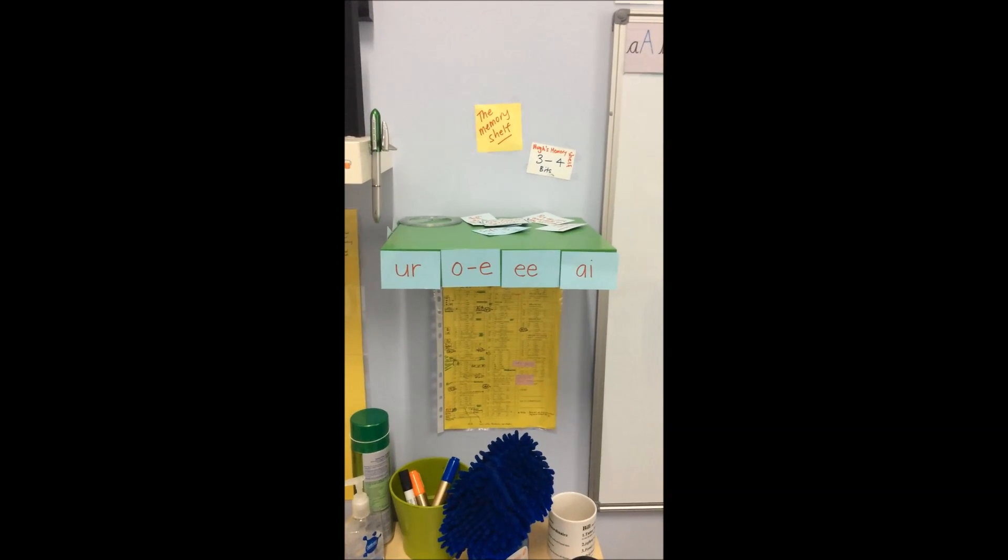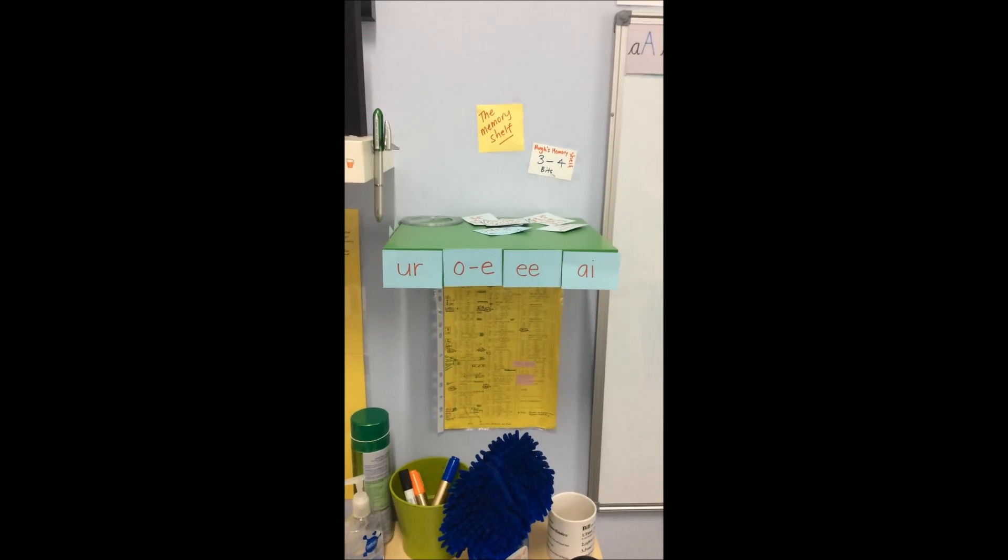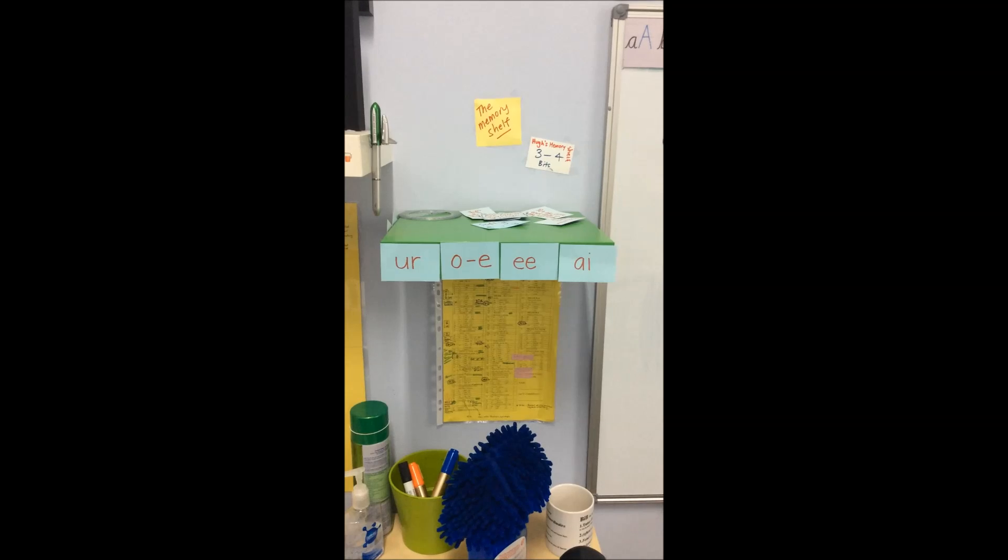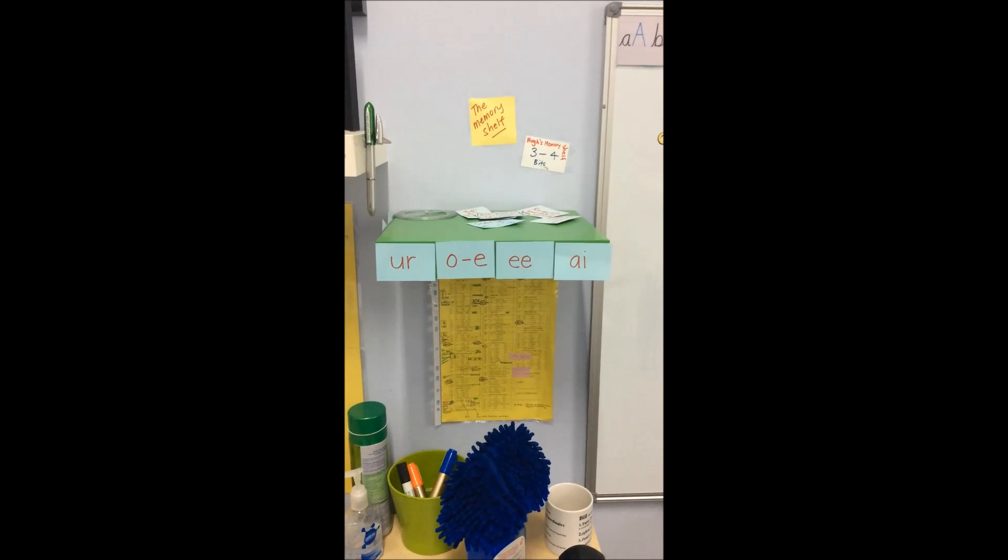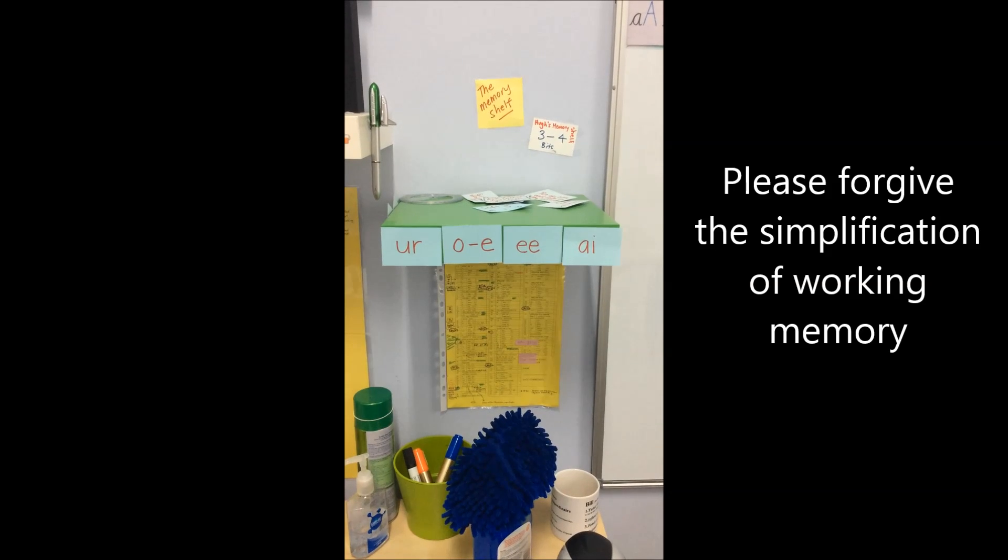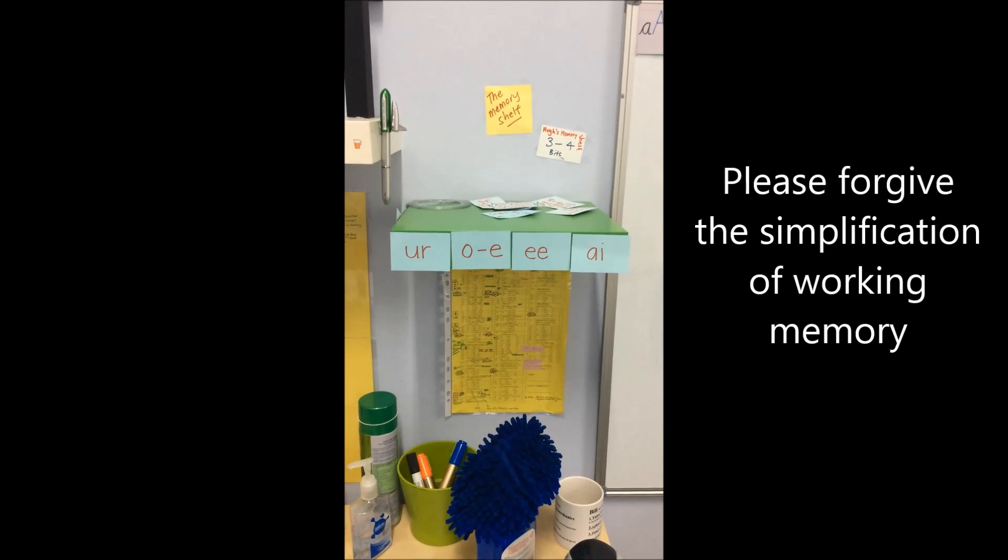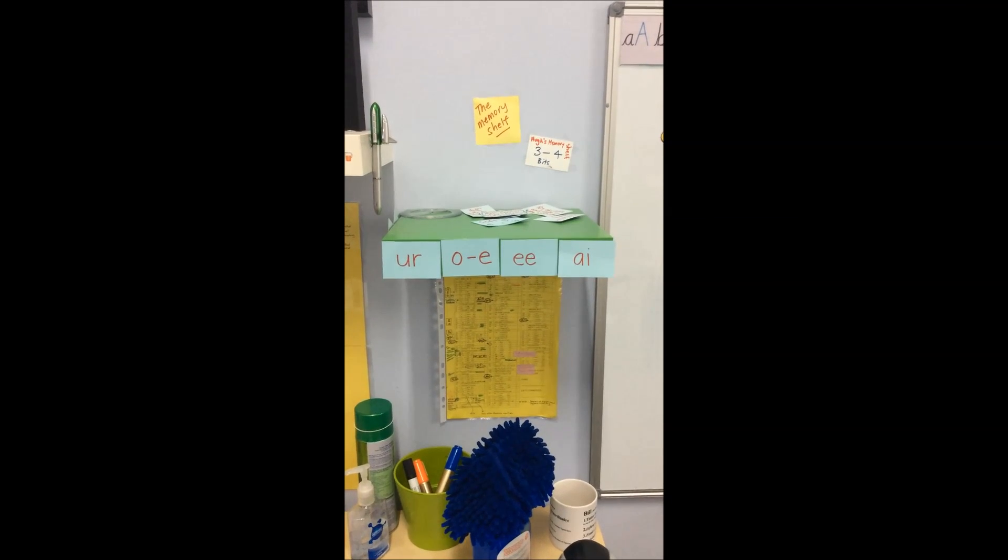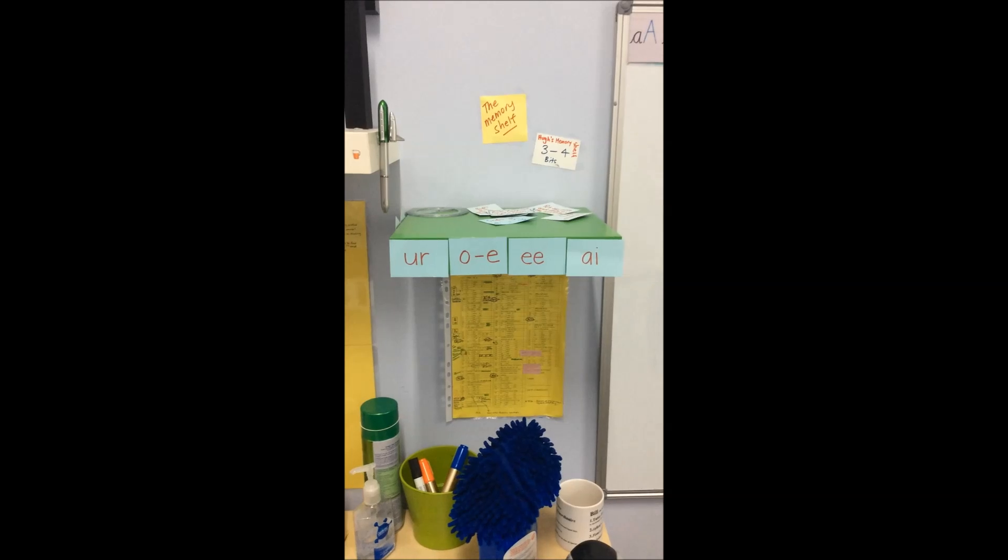Let's assume we're working with a young person who can only deal with four pieces of information in their working memory at one time. For those of you who understand working memory better than I do, please bear with this really rough and generalized explanation.